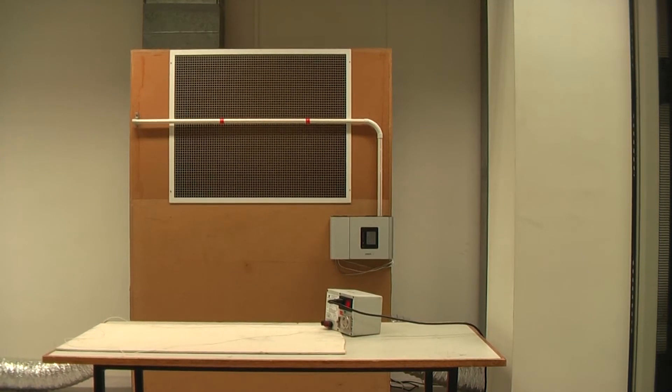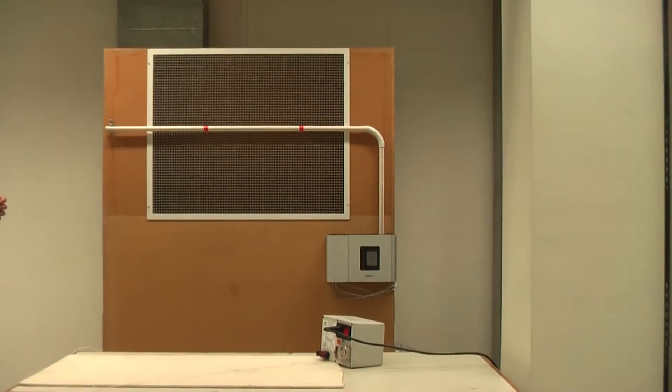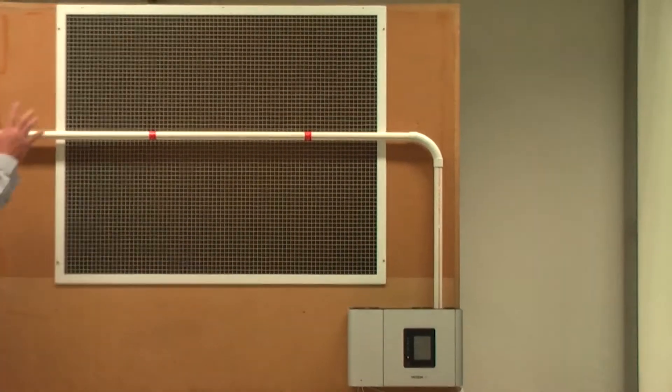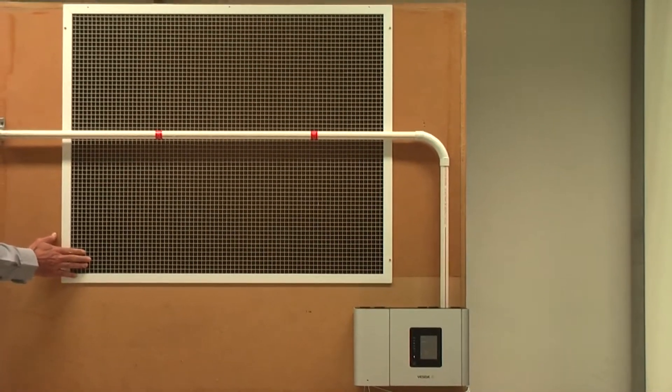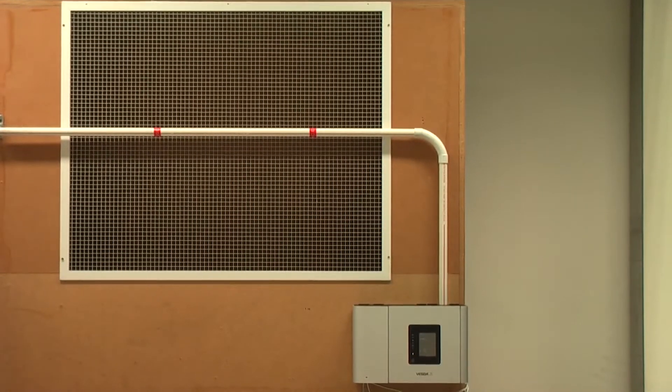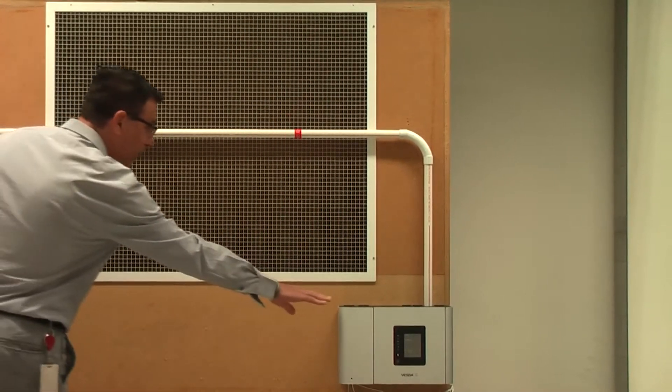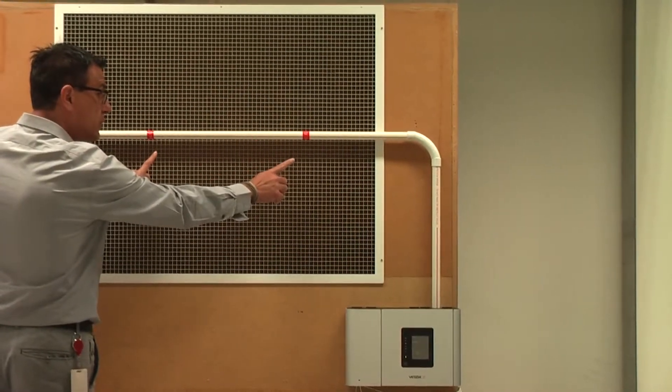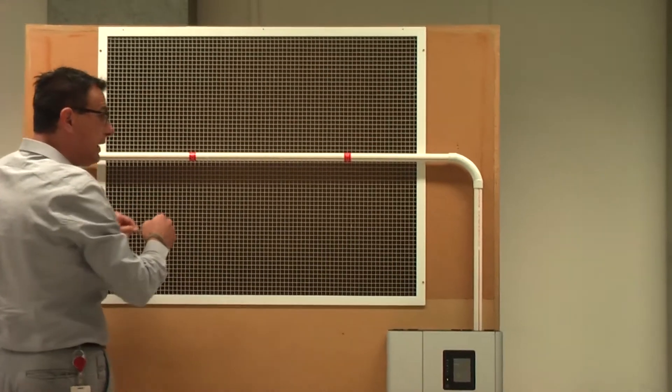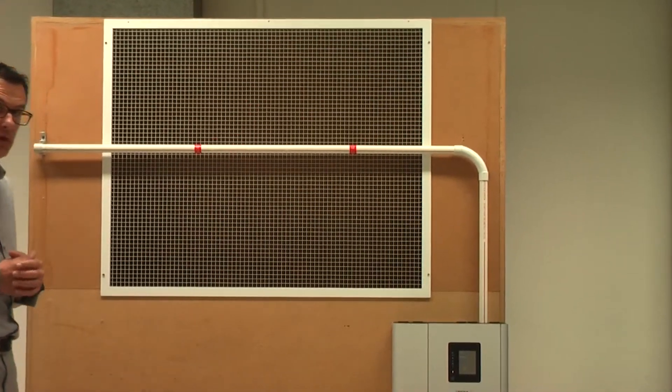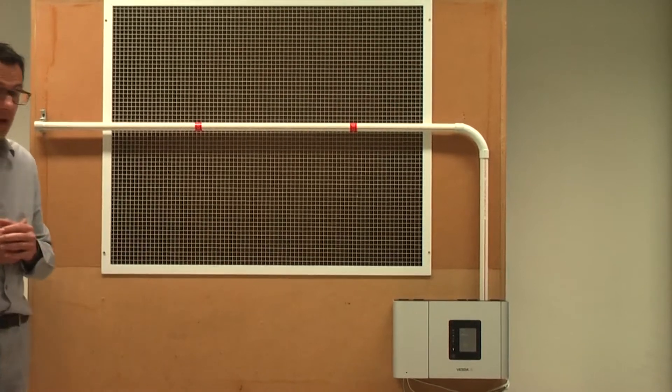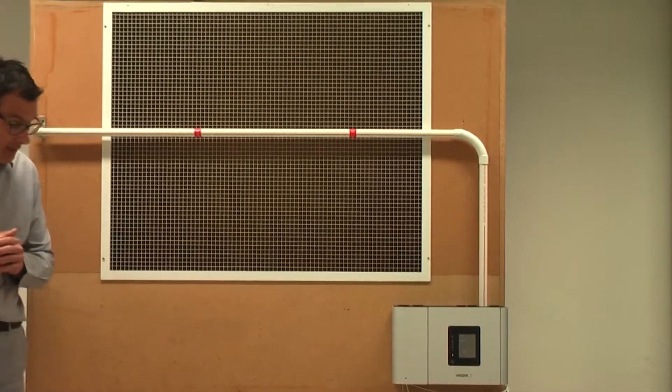For the setup, we have a return grill of 0.8 square meters which is protected by a VEU detector comprising two sampling holes. Each hole has a coverage area of 0.4 square meters and conforms to NFPA 76 installation standards.